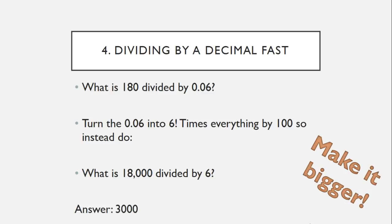And that's much easier to do. That's 3,000. 18 divided by 6 is 3, and then we've got the 1,000 left over, giving us the answer 3,000. So the strategy here, multiply everything to get rid of the decimal and leave you with a nice number that you're good at dividing by.